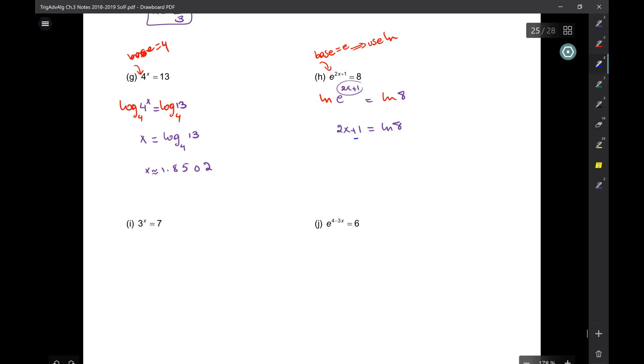But now look, if I keep it that way, can I subtract one from both sides? So two X is LN of eight minus one, not LN of seven. So if you just kept going, subtract one and then divide by two, that's approximately how much? 0.5397. Awesome.